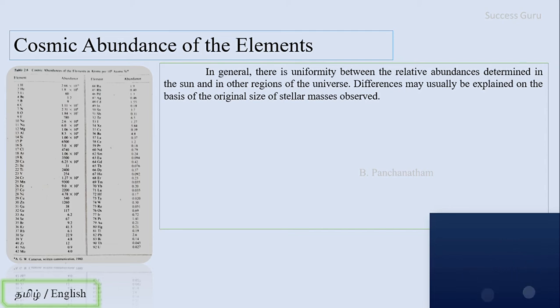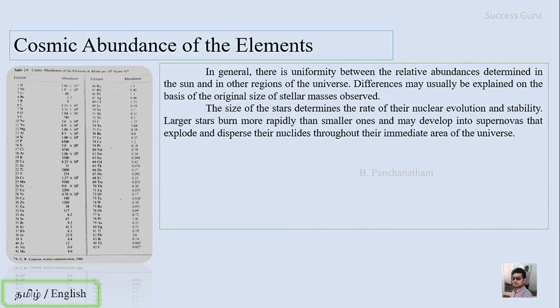The sun and other regions of the universe — differences may usually be explained on the basis of their original size and stellar mass. The universe and the star determine the rate of their nuclear evolution and stability. Large stars evolve at a lot of speed, while smaller stars have a slower reaction.